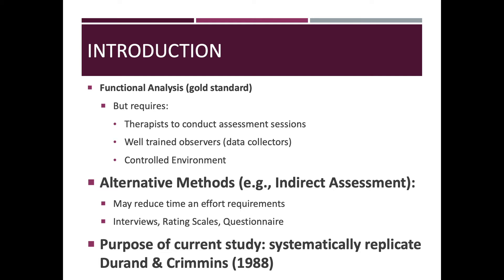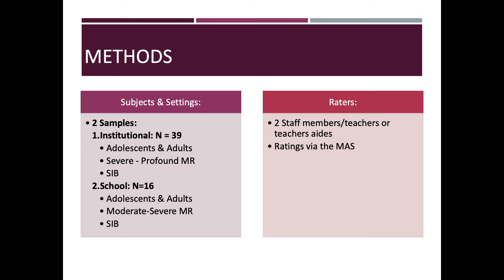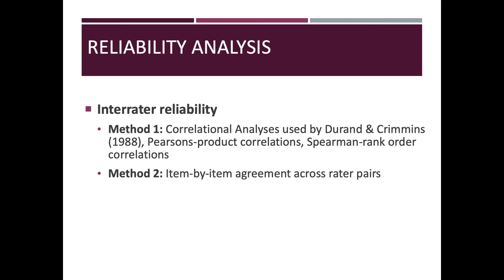The purpose of Zarconi's study was to systematically replicate Durand and Crimmins and then do an additional more stringent analysis. Their general method involved two samples: an institutional sample of 39 individuals with severe to profound mental retardation all of whom engaged in SIB, and a school setting with adolescents and adults with severe developmental disabilities all of whom engaged in SIB. The raters who administered the Motivational Assessment Scale included two staff members, teachers, or teacher's aides.